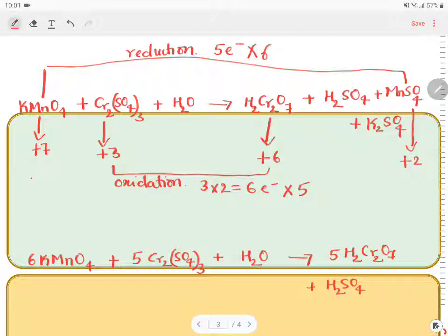Plus 6 MnSO4 plus K2SO4. So this is the equation.